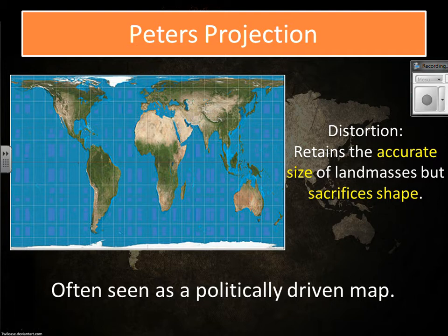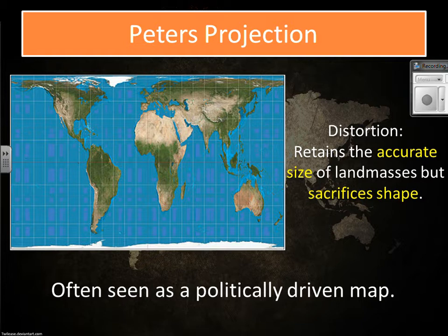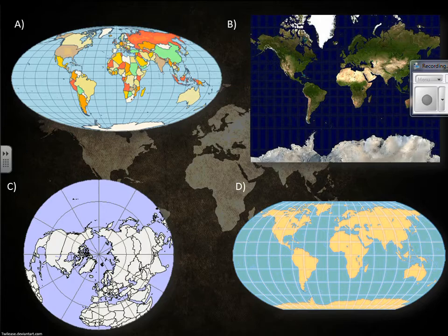Peters distorts the shape, but gives you the accurate size — it's a little bit different. This is used for politically driven maps or ones that really focus on countries.